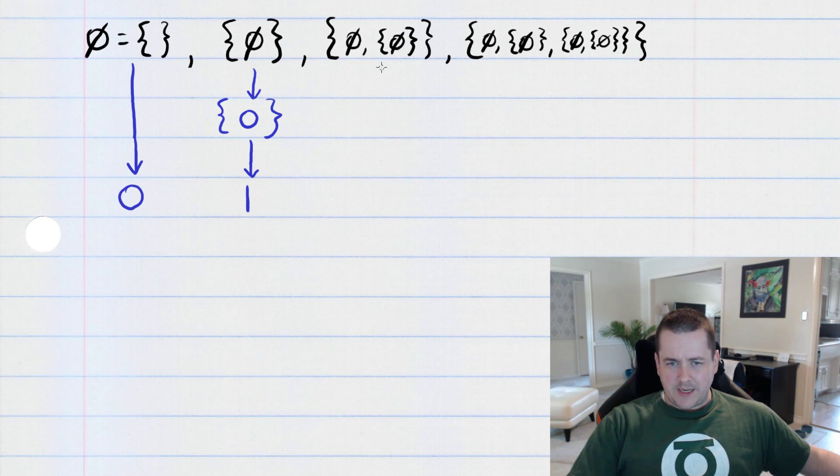the notation gets a little bit confusing if you haven't done much set theory, so we can simplify it. We're going to build a set that contains the number zero, that's the empty set, and it contains the number one.